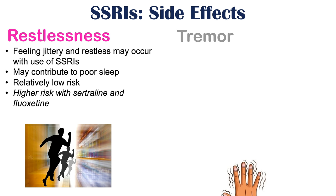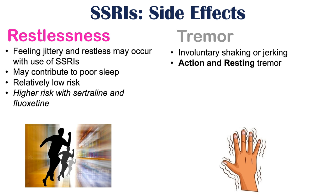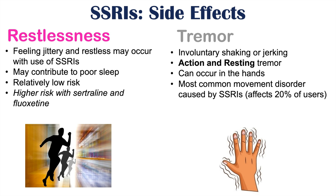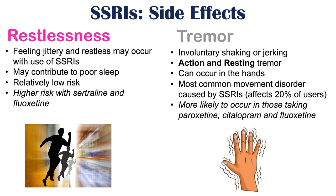SSRIs can also lead to tremors — involuntary shaking or jerking. This is going to be an action and resting tremor, occurring at rest or during activity, most often in the hands. This is the most common movement disorder caused by SSRIs, estimated to affect up to 20% of patients. Tremor is more likely with paroxetine, citalopram, and fluoxetine. Note that citalopram is different from escitalopram — citalopram was an older version that was modified to become escitalopram, which has different and oftentimes lower risk of certain side effects.